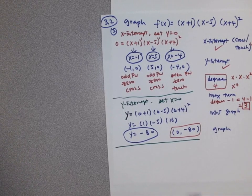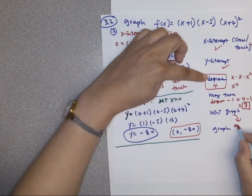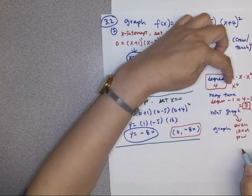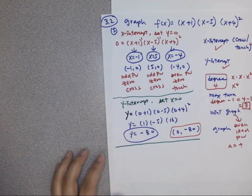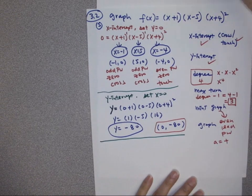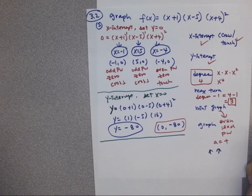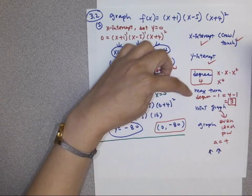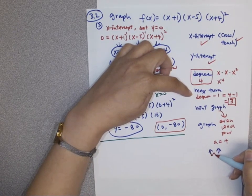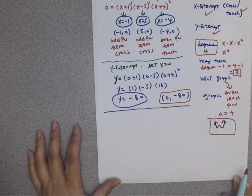For the mini graph: degree four is even leading power, and a is positive — so both sides up, like a parabola. Maximum turns of three means it looks like a W shape.